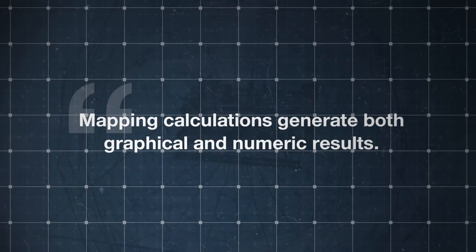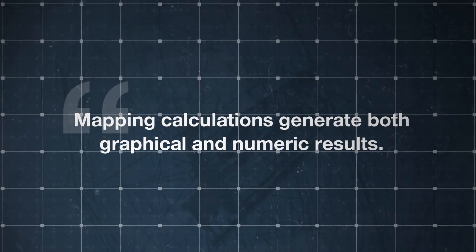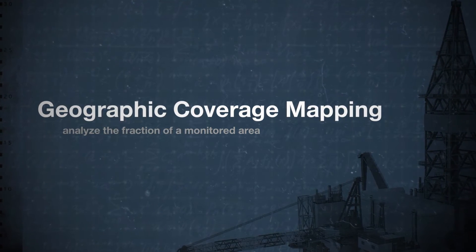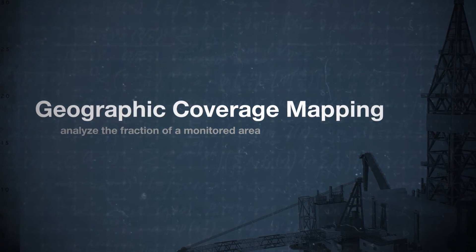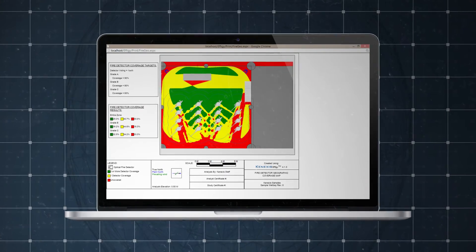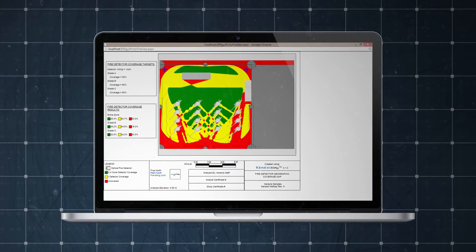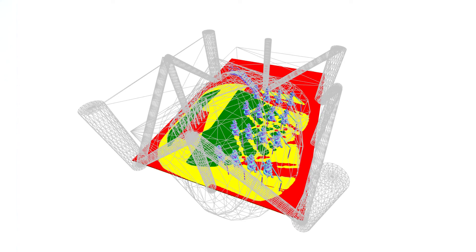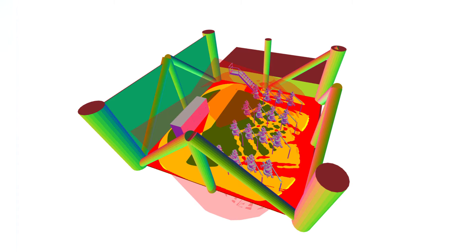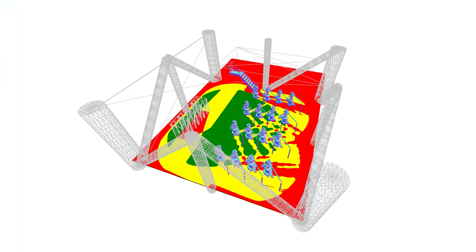Mapping calculations generate both graphical and numerical results and can be performed in one of two ways: geographically or scenario-based. Geographic coverage mapping is used to analyze the fraction of a monitored area where hazards are detectable. The results of geographic mapping are color-coded coverage maps where the coloring represents the number of detectors monitoring any given area.